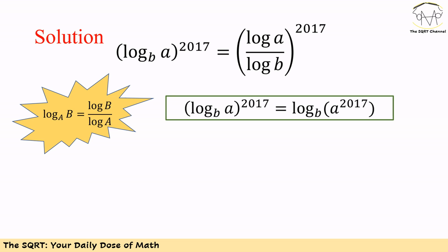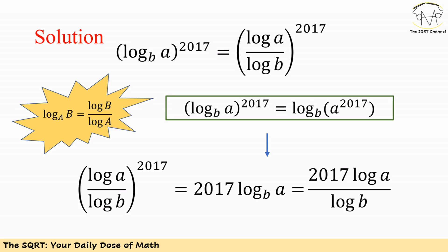Now we have log of A in base B to the power of 2017 and we want to simplify it. Recall that log of B in base A equals log B divided by log A — you can use base 10 here. Using this change of base property, we can simplify log of A in base B to the power of 2017 as log of A over log of B, all to the power of 2017.